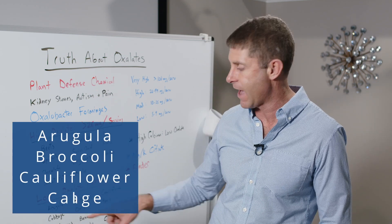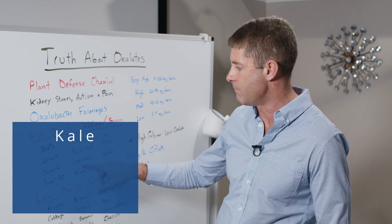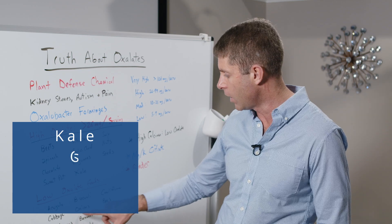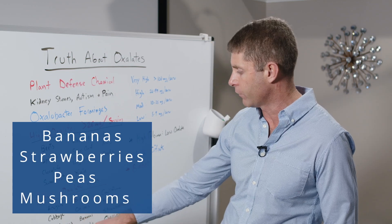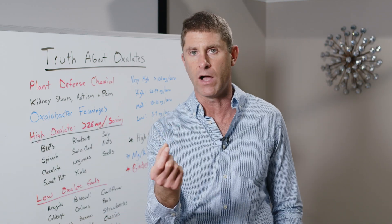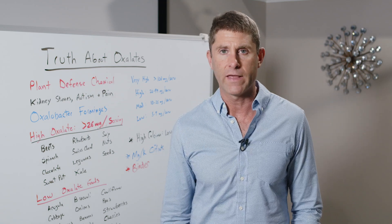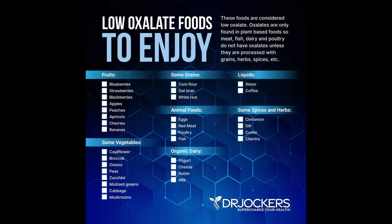Onions and peas are low oxalate. Mushrooms, bananas, and strawberries are also low. Most fruit I'm not overly concerned about — even though raspberries are higher oxalate fruit, fruit in general has fewer plant defense chemicals the body has to deal with, and it has a lot of structured water that can be beneficial for cell communication. So not overly concerned about high oxalate fruit.